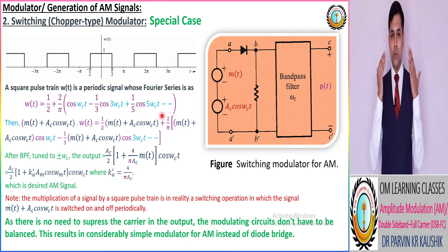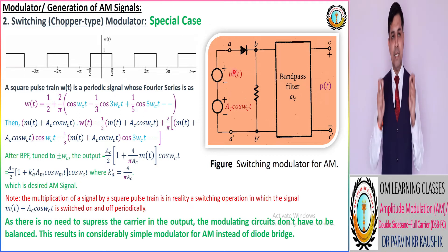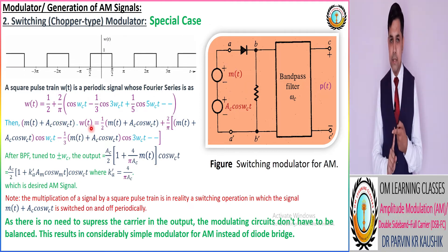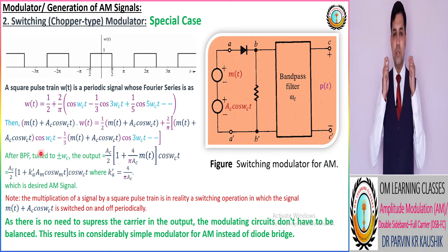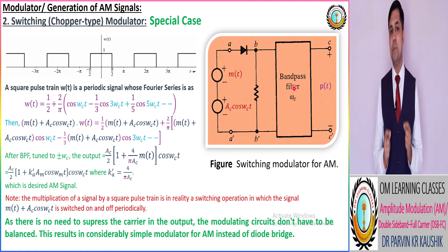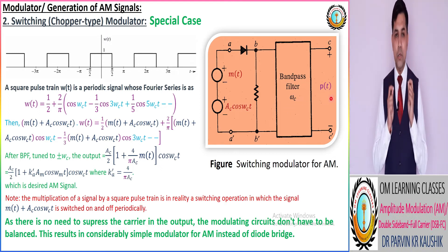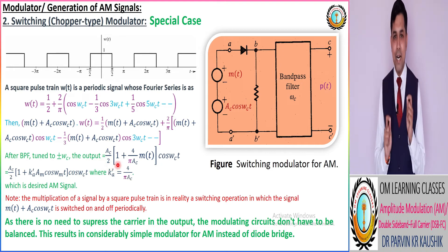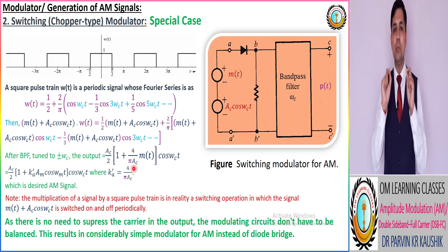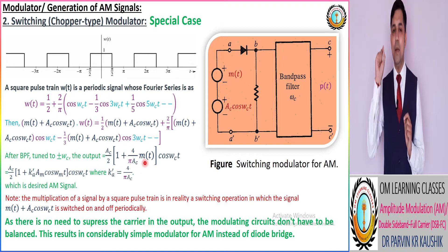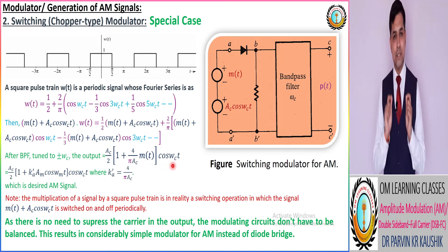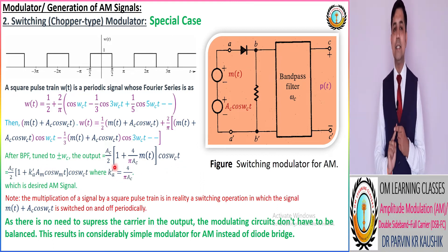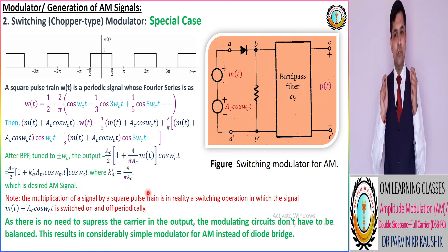This mathematical equation is multiplied by V1(t), which is m(t) + A_c cos(ω_c t), and we get the output. This signal is then passed through the band-pass filter and we get the signal equivalent to (A_c/2)[1 + (4/πA_c)·m(t)] cos(ω_c t). Here the amplitude sensitivity factor K is equivalent to 4/(πA_c), and this is our desired AM modulated signal.